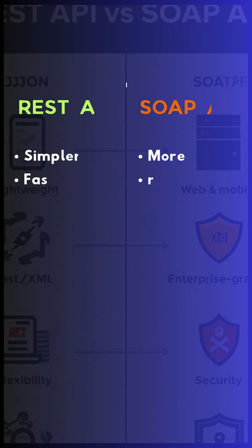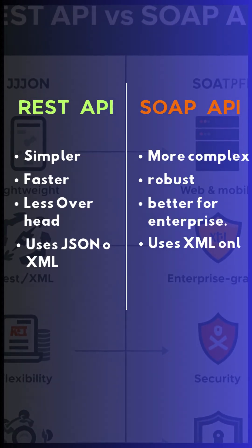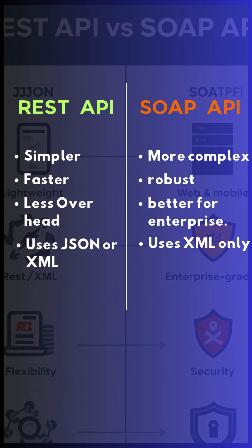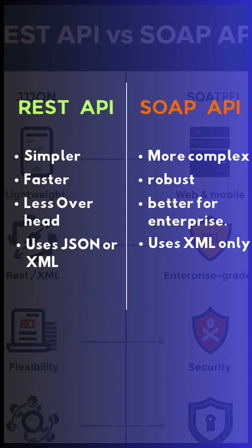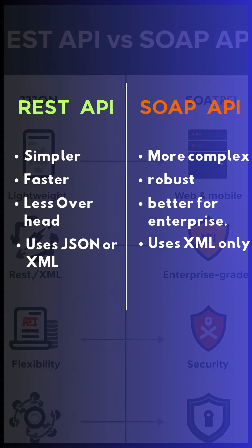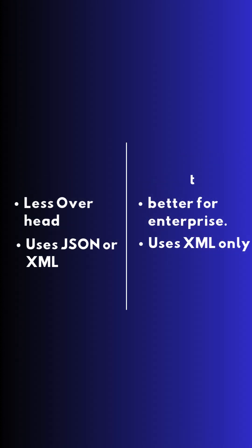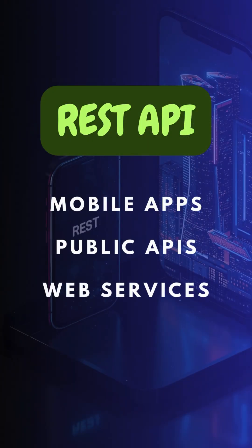So what's the difference? REST: simpler, faster, less overhead — uses JSON or XML. SOAP: more complex, robust, better for enterprise — uses XML only.